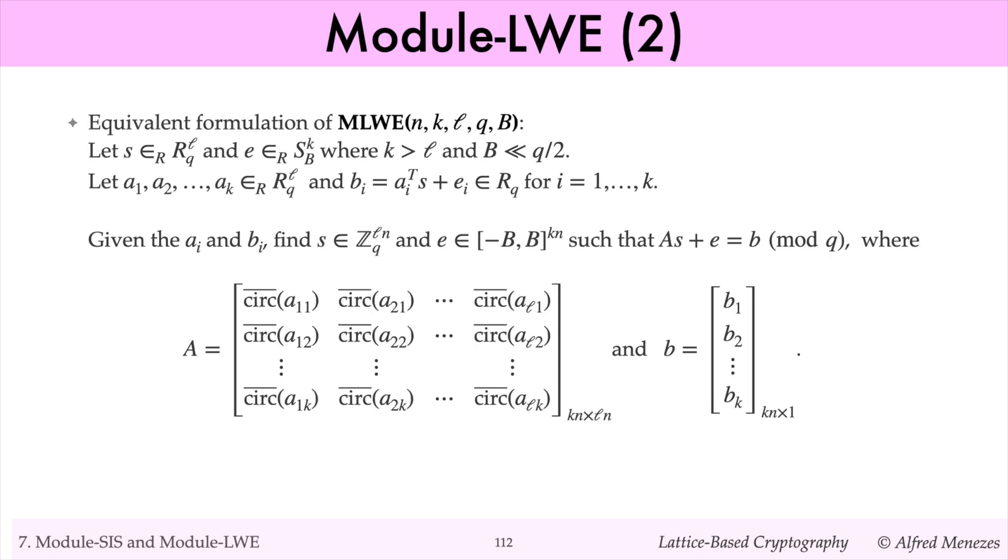The matrix form of module LWE is the following. Solve the equation AS plus E equals B modulo Q, where A is the matrix obtained from the anti-circulant matrices corresponding to the polynomials in the polynomial vectors AI, and the vector B is obtained from the coefficients of the BI polynomials. Note that A is a KN by LN matrix. Observe that module LWE is a special case of LWE where the matrix A is structured, namely, comprised of blocks of anti-circulant matrices.